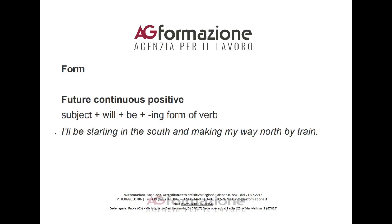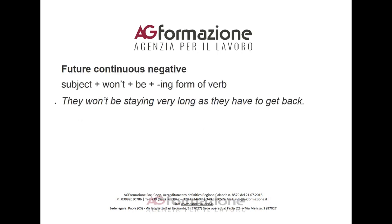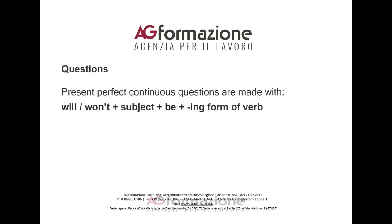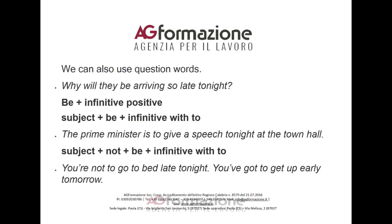The future continuous is sometimes used to make polite inquiries about people's plans. For example: Will you be staying for dinner? Form — future continuous positive: subject plus 'will' plus 'be' plus the -ing form of the verb. I'll be starting in the south and making my way north by train. Future continuous negative: subject plus 'won't' plus 'be' plus the -ing form of the verb. They won't be staying very long as they have to get back. Questions are made with 'will/won't' plus subject plus 'be' plus -ing form. We can also use question words. Why will they be arriving so late tonight?